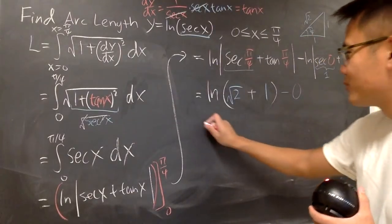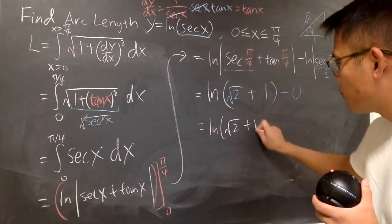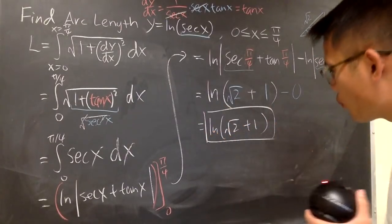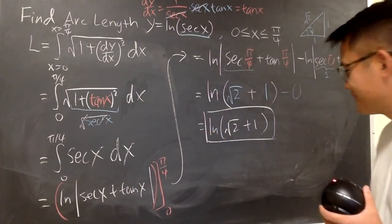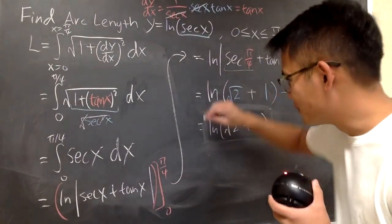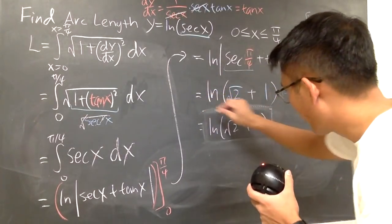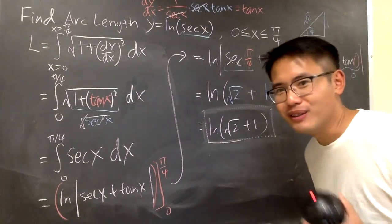So you pretty much will have natural log of √2 + 1. And with that, we are done. I'll see you next time.